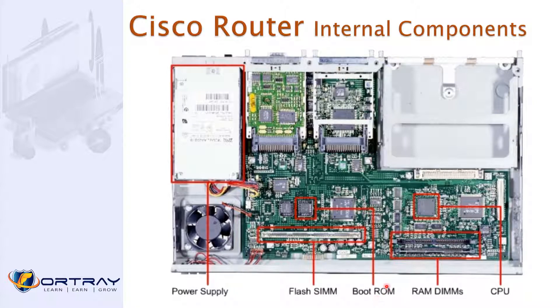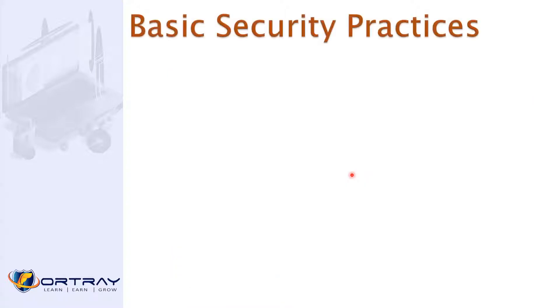There is also a boot ROM, RAM which is where the configuration is stored, and a CPU. These are the different components of the router, and there are other components as well that we will cover.